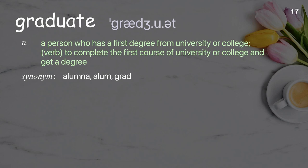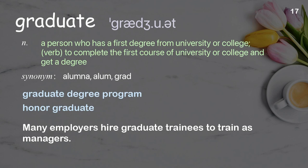Graduate: a person who has a first degree from university or college; verb — to complete the first course of university or college and get a degree. Examples: graduate degree program, honor graduate. Many employers hire graduate trainees to train as managers.